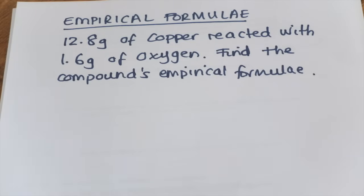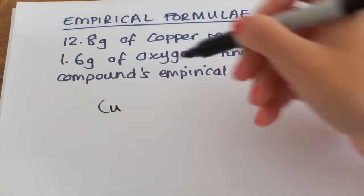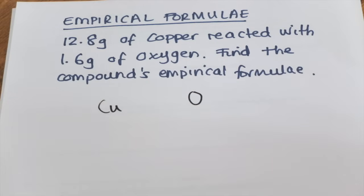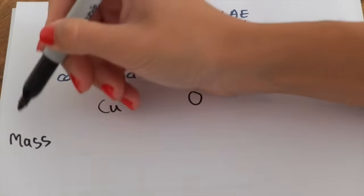Now we're going to look at empirical formulae. Remember an empirical formula is the simplest ratio of atoms of each element present in a compound. It's best to arrange this in a table format because you can use your formula triangle all over again and the values just pop out at the end. The first thing you want to do is list the elements present — in this example we've got copper and oxygen. Then write in the mass.